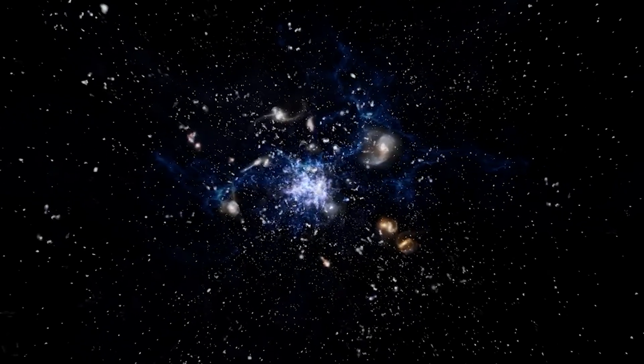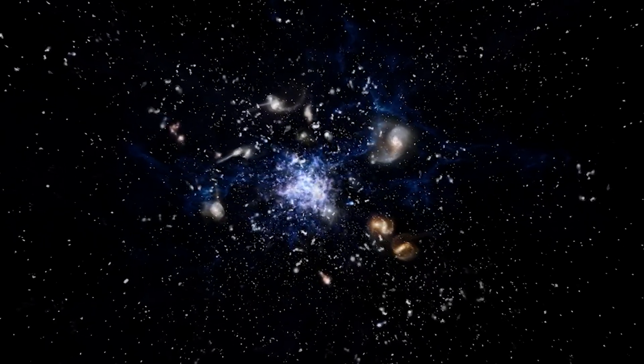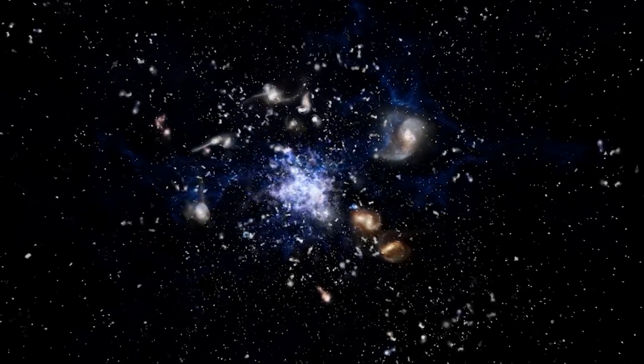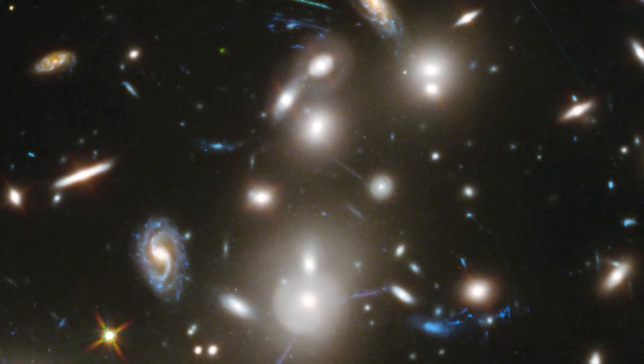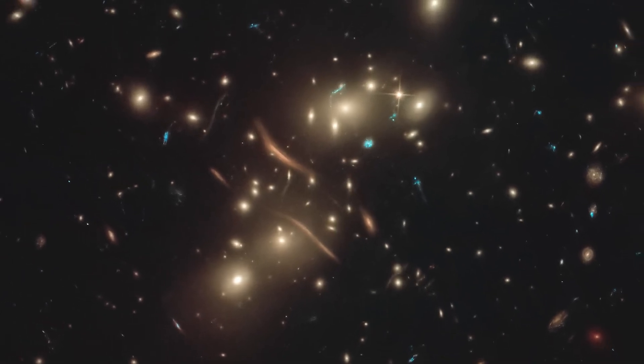When we look out into the extremely far distances in space, we are actually observing events that occurred a very long time ago. The galaxies we see near the Hubble sphere are not galaxies that exist in the present, but are galaxies that existed billions of years ago, according to our standard cosmological model.